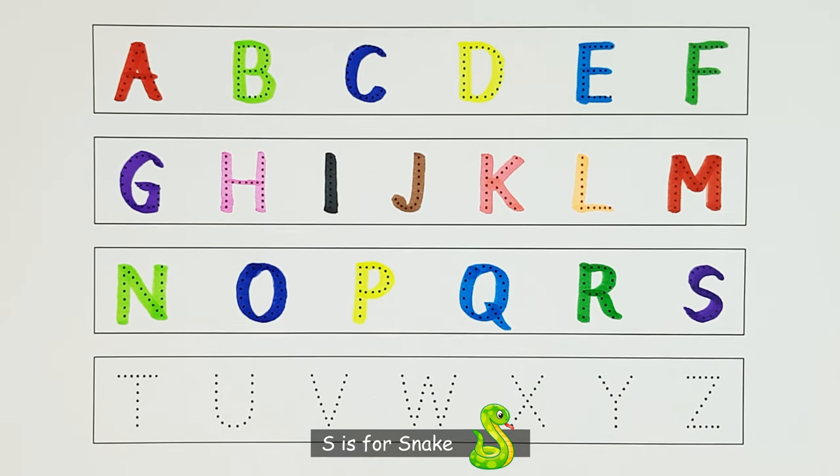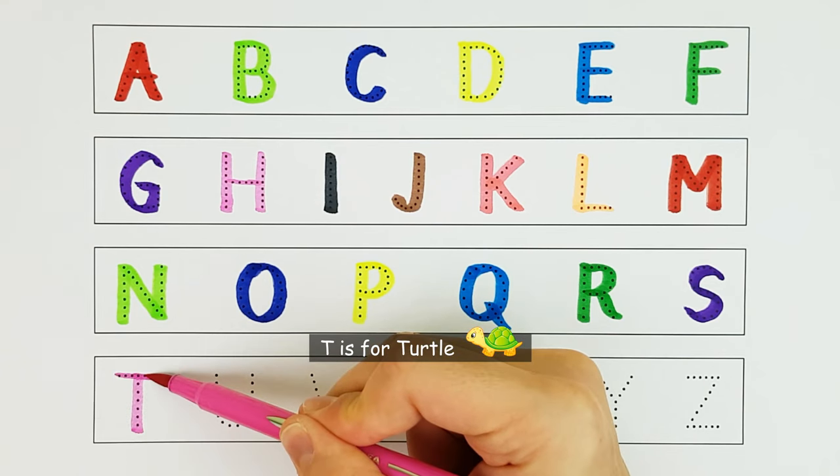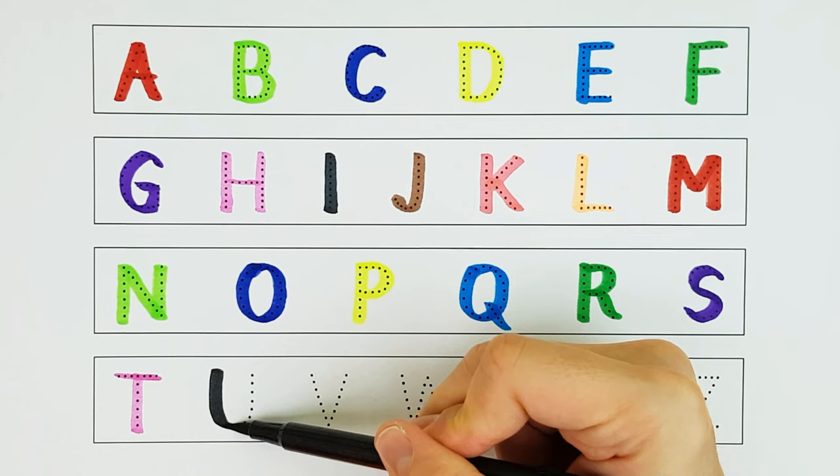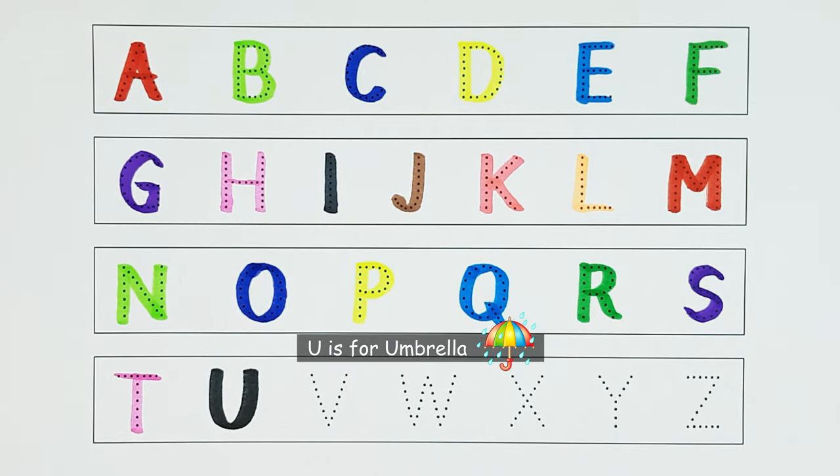S. S is for snake. S. T. T is for turtle. T. U. U is for umbrella. U.